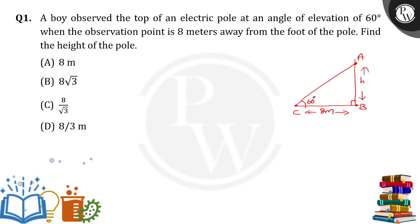So now we have to calculate the height of the pole h. Here they formed a right angle triangle. From the figure, in triangle ABC, AB is equal to h, BC is equal to 8 meters, angle C is equal to 60 degrees, and angle B is equal to 90 degrees.